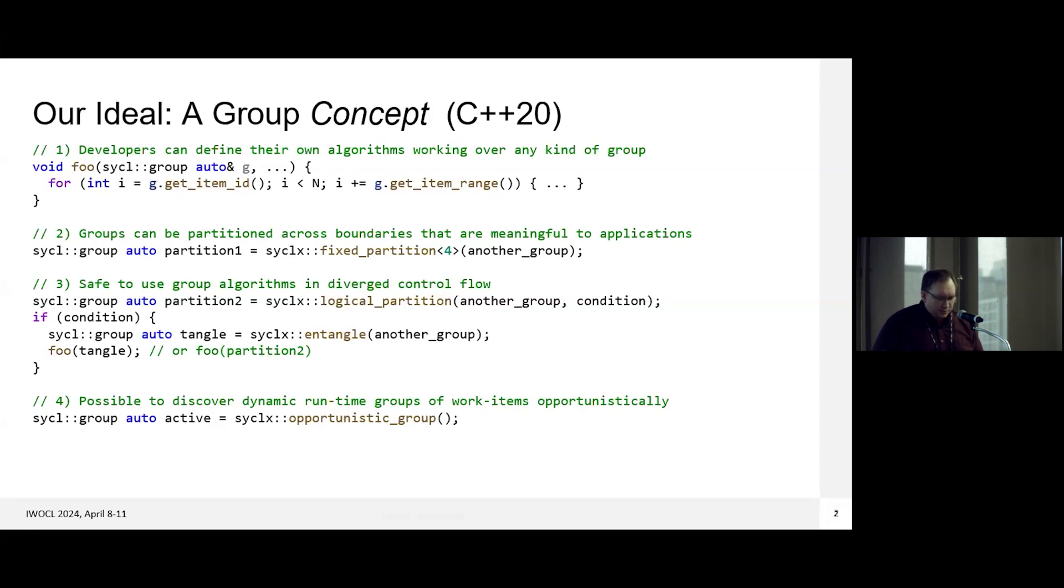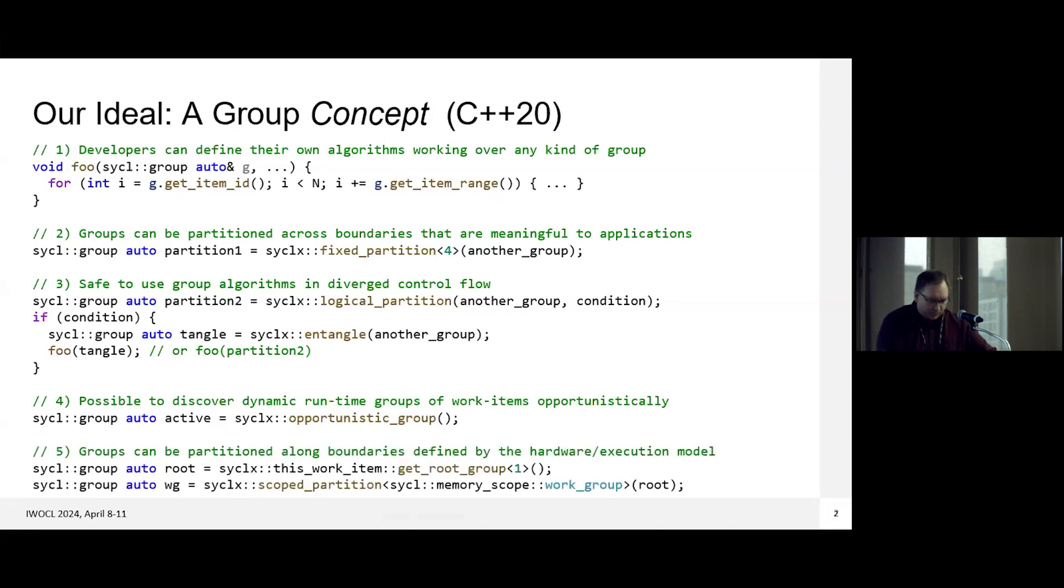Another way we think we can use this is we think it's possible to discover dynamic runtime groups of several work items opportunistically. One simple example of this could be, give me a group that consists of all the threads or SIMD lanes that are currently active in control flow. And then the fifth thing we think this can be really useful for is it can provide a nice flexible mechanism to describe your hardware or the execution model that you're trying to target. So the rest of this presentation is going to walk through the steps we could take to try to evolve SYCL towards this ideal. And we'll highlight problems that we need to address along the way.